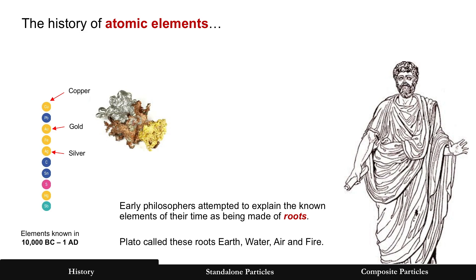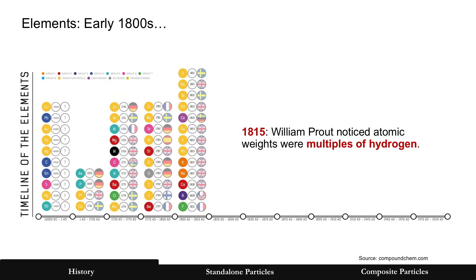Plato happened to call those 'roots,' so it goes on to something, although it wasn't quite correct. Now let's fast forward to the early 1800s, when many more elements were discovered. William Prout noticed that atomic weights of these elements were multiples of hydrogen — hydrogen being the smallest and the first atomic element in the periodic table.